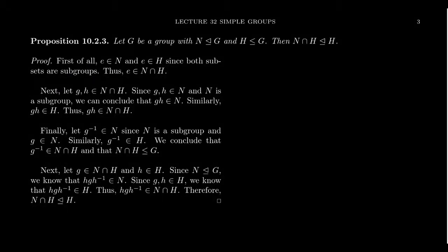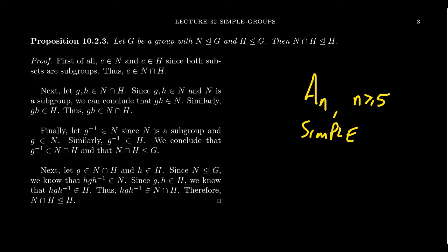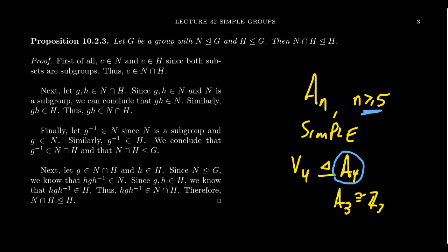So what about a non-abelian simple group? There is one within our grasp: the alternating group Aₙ. It turns out that when n ≥ 5, Aₙ is a simple group. A₄ is not simple because A₄ has the Klein-4 group sitting inside it as a normal subgroup. A₃ is technically simple too, but it's isomorphic to Z₃, a cyclic group of order 3 — so it's an abelian one. I'm going to collect some lemmas to help prove that A₅ and larger alternating groups are all simple non-abelian groups.